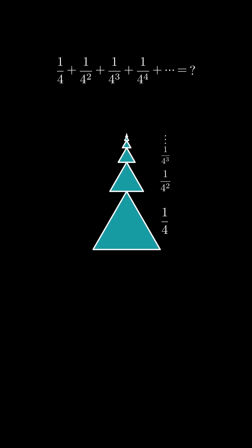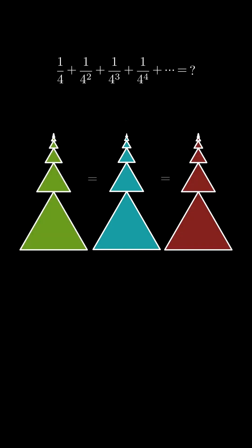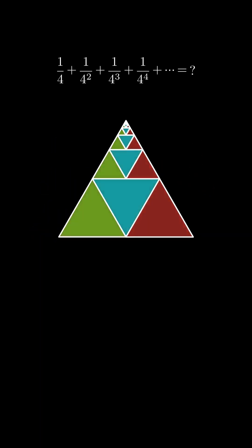The total area of these triangles is the sum of our geometric series. Since the blue, green, and red areas are equal, each represents one-third of the triangle.